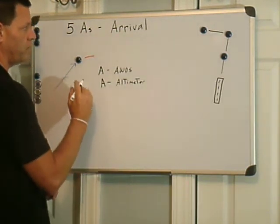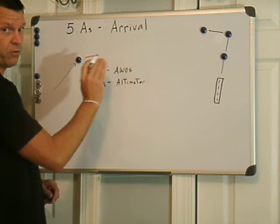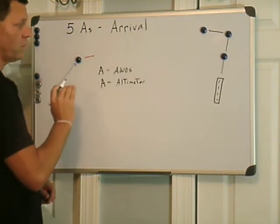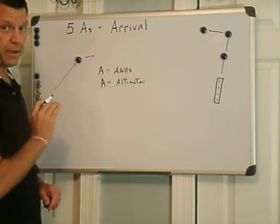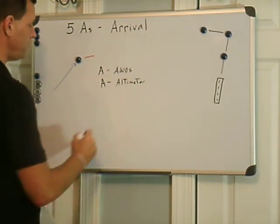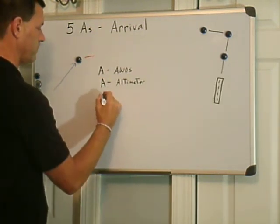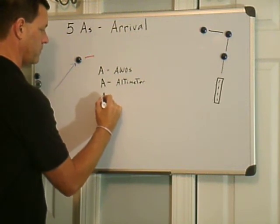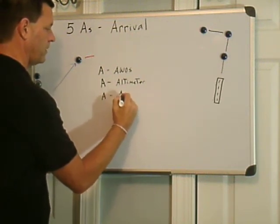Now what we're going to do is we're going to talk to air traffic control. We're going to determine what approach we're going to fly, and we're going to basically get approval for that approach.